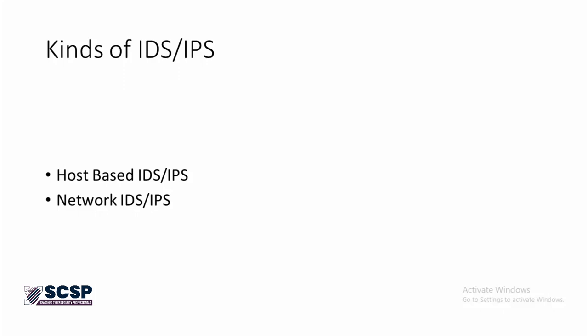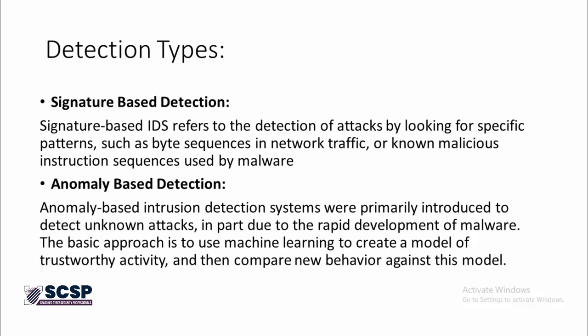Those are the basic kinds of IDS and IPS. Now we have detection types — two types of detection mechanisms. First is signature-based detection, which refers to the detection of attacks through pattern matching. It matches the pattern, and if it sees something malicious, an IPS stops it while an IDS just logs it and lets it go.